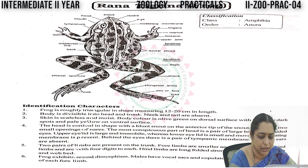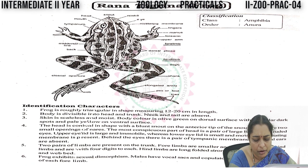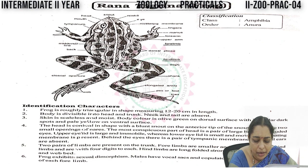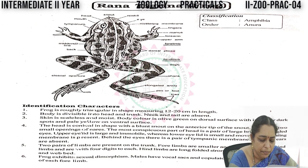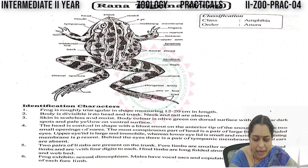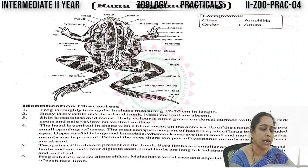The most conspicuous part of the head is a pair of large, bright, protruded eyes. The upper eyelid is large and immovable, whereas the lower eyelid is small and movable. The nictitating membrane is also present, considered as a third eye. Behind the eyes there is a pair of tympanic membrane. External ears are absent in amphibians.